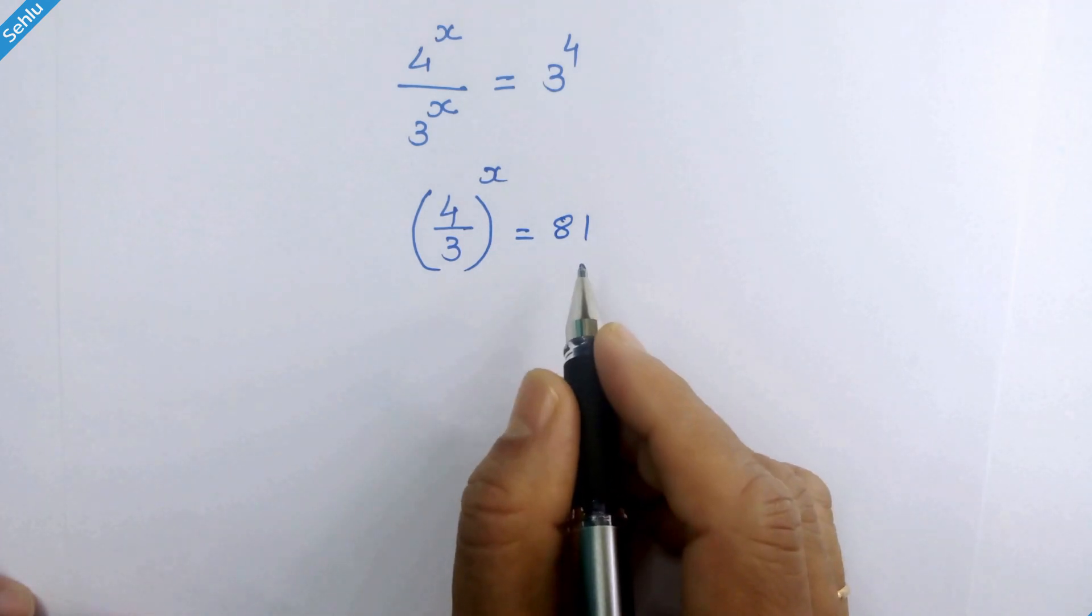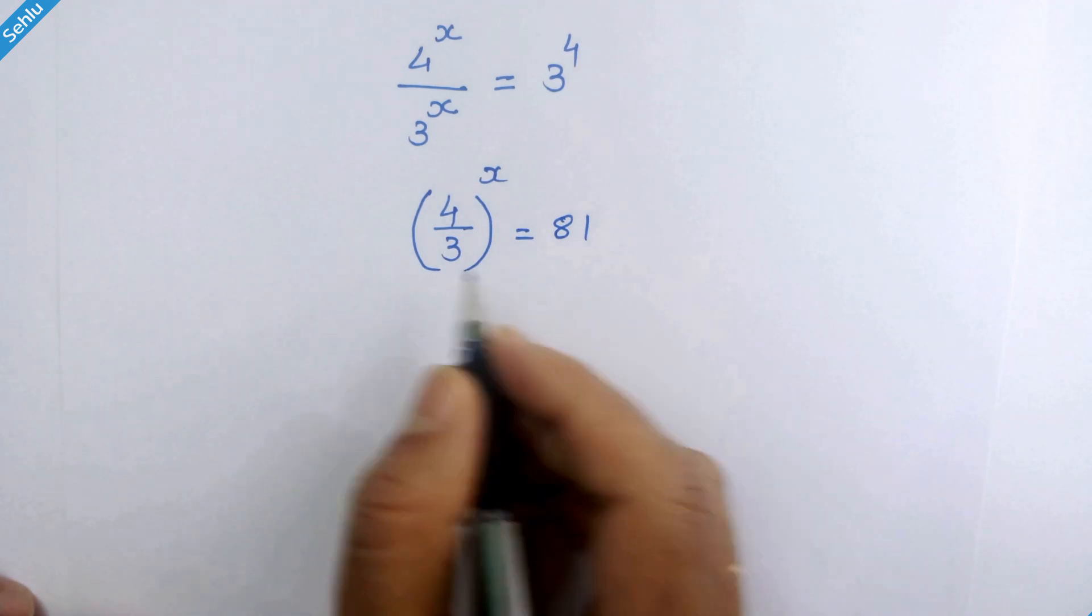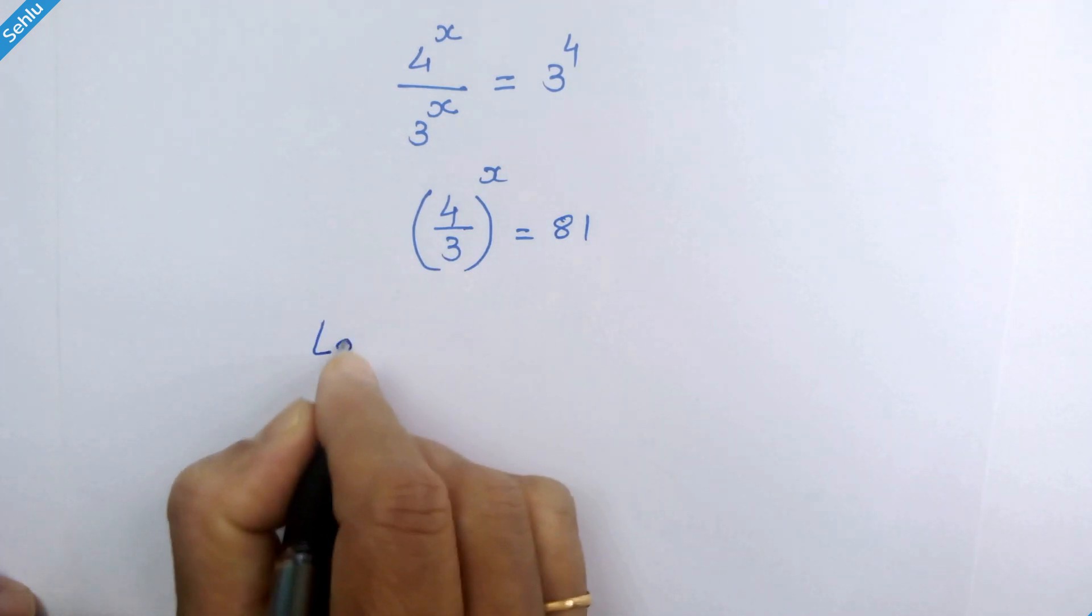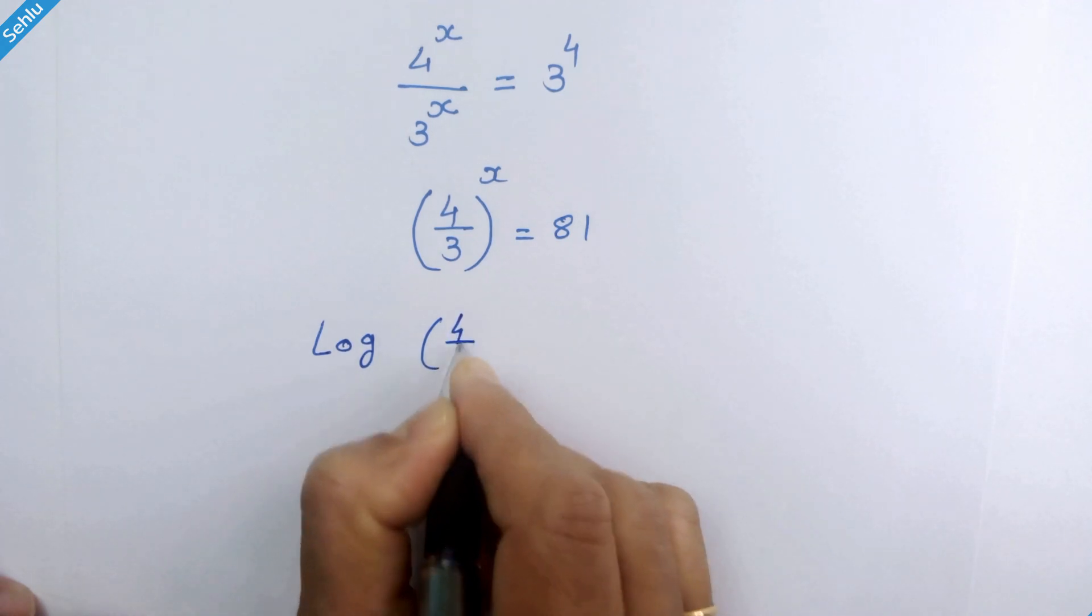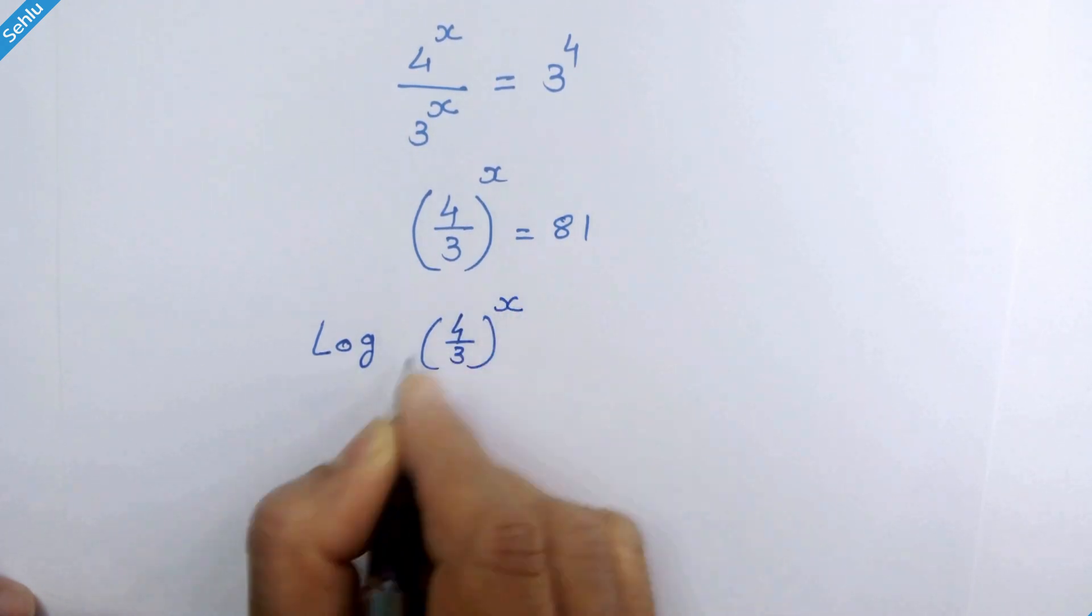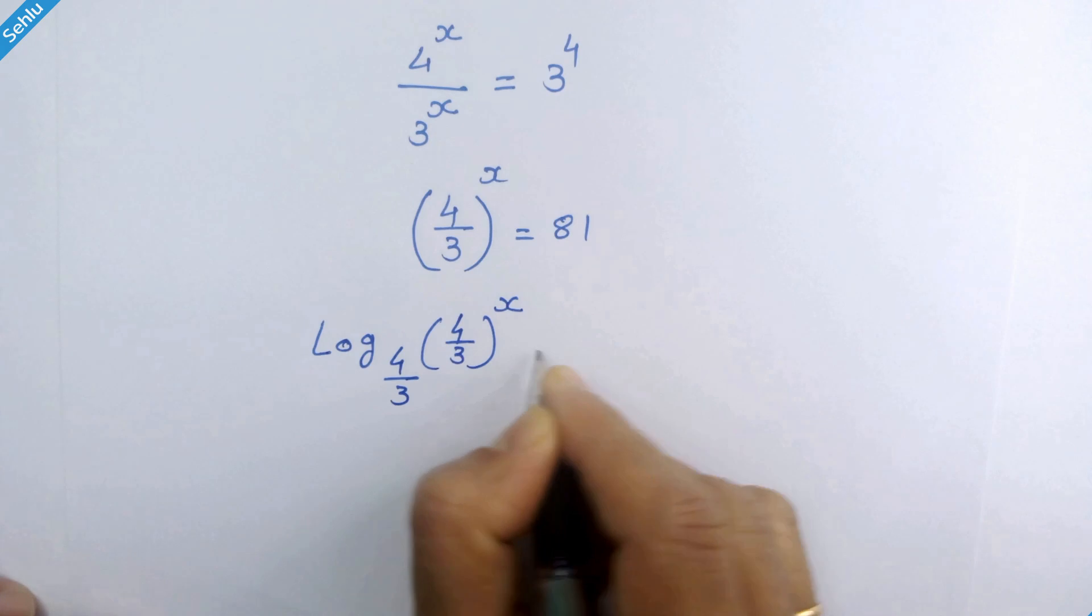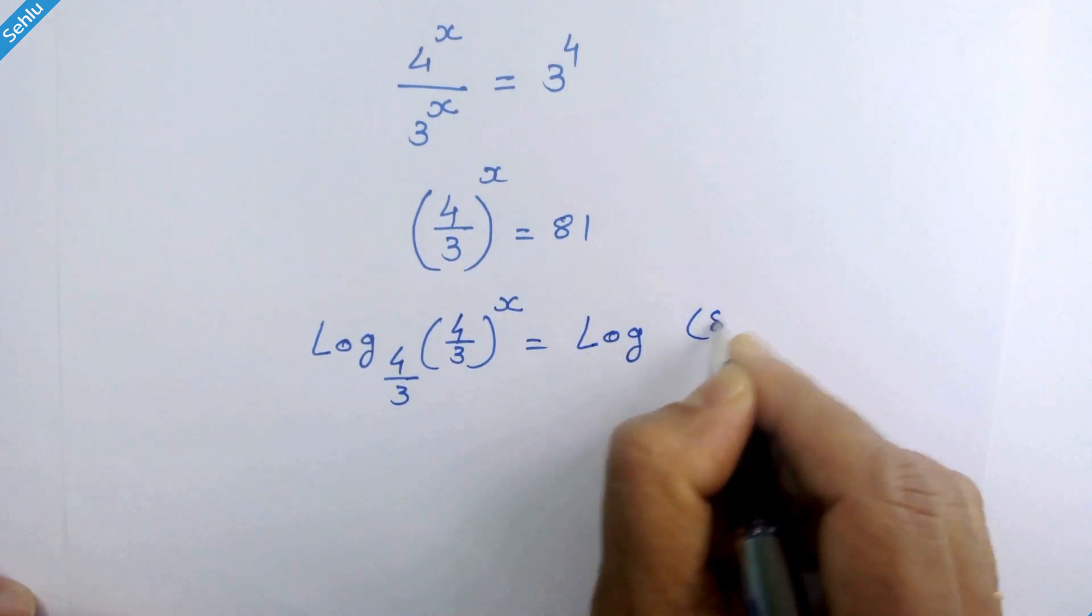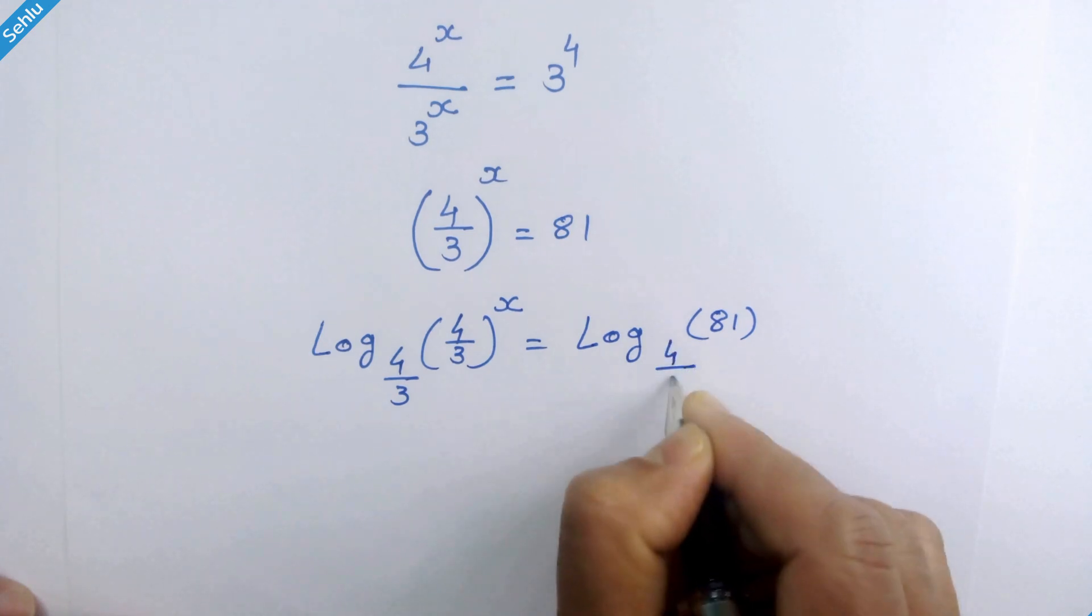We have almost got the answer. Just need to take a log having base of 4 upon 3. So log of 4 over 3 whole raise to x base 4 over 3 is equal to log of 81 base 4 over 3.